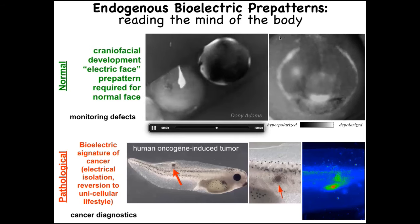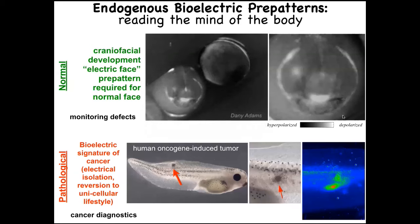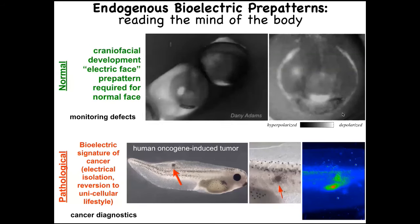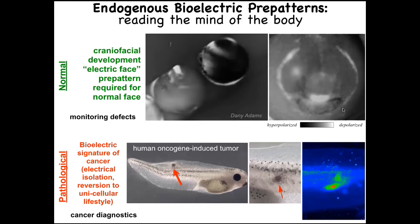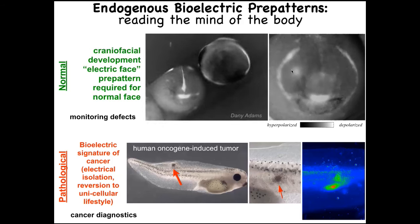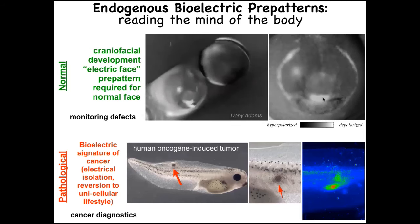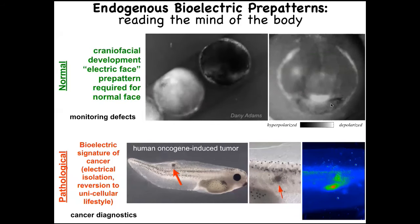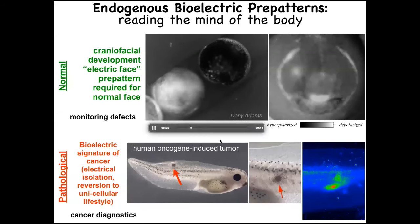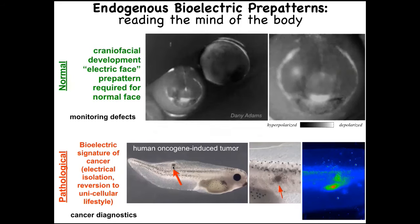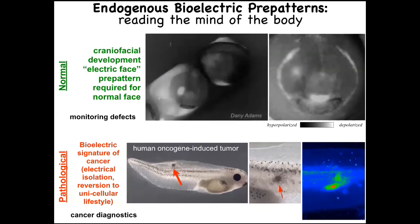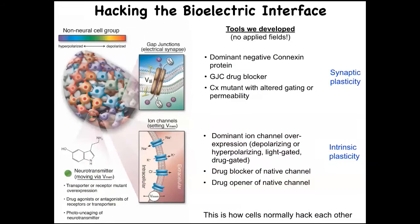This is a time-lapse of a frog embryo putting its face together. Here's one particular pattern — the easiest one to decode, which we call the electric face, because it looks like a face. By looking at the electrical pattern in these tissues, you know what the future gene expression and anatomy will be: here's where the right eye will form, here are the placodes, here's the mouth. If you manipulate this pattern, the cells build something different.